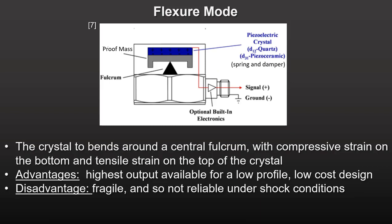In flexure mode, the crystal bends around a central fulcrum, with compressive strain on the bottom and tensile strain on the top of the crystal. You get very high sensitivity in a small, low-cost package. However, the design is fragile, especially under shock loads, and is used today only for very short sensors.